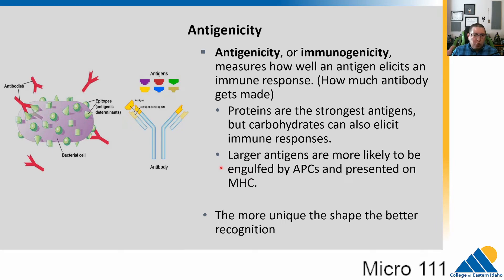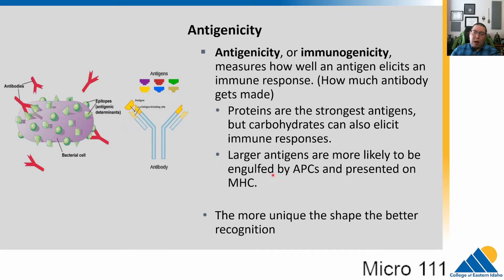Antibodies respond to specific shapes, and there are different antibodies for every different antigen we encounter. We measure immune response using the concept of antigenicity — essentially how much does the antigen stimulate the immune system and how much antibody gets made in response. Proteins are the strongest antigens and generate the most immune response. Large antigens are more likely to be engulfed by antigen-presenting cells. It's really about how unique the shape is — the more unique, the better the immune system can recognize it. Lipids and nucleic acids are too regular in shape, so they don't get recognized well.